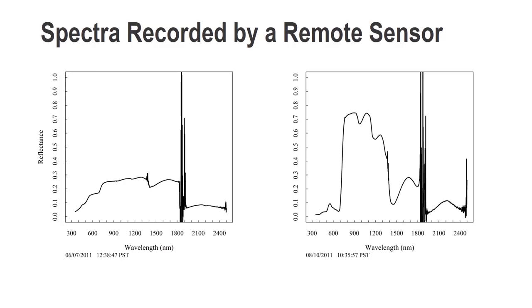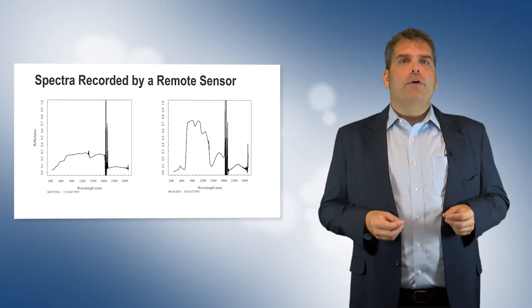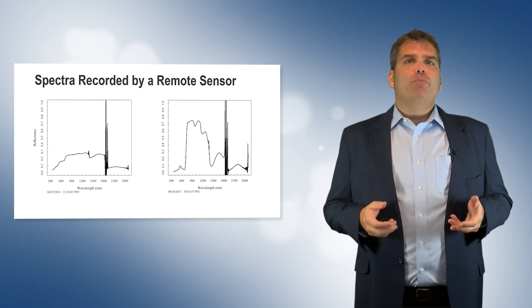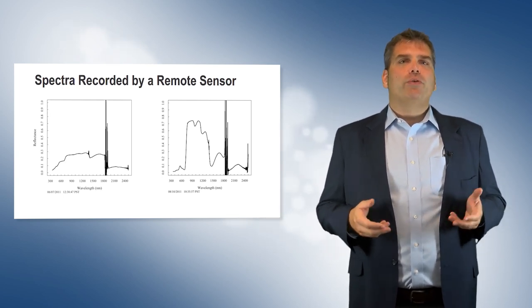These diagrams represent the spectral information recorded by a remote sensor above a cotton field in California for two periods of time. Peaks represent regions of strong reflectance, while troughs represent regions of strong absorption. In each diagram, focus on three regions of the electromagnetic spectrum: the green portion around 550 nanometers, the red portion around 670 nanometers, and the NIR shoulder, which begins around 780 nanometers.